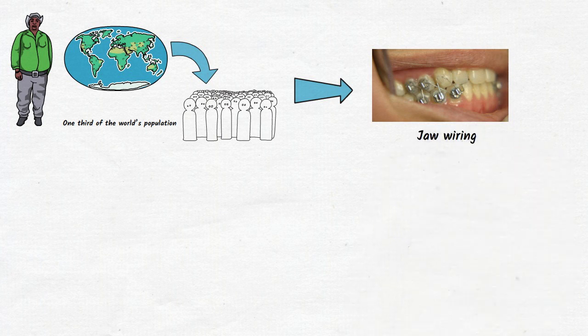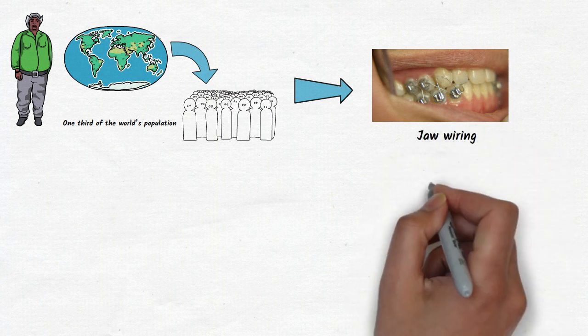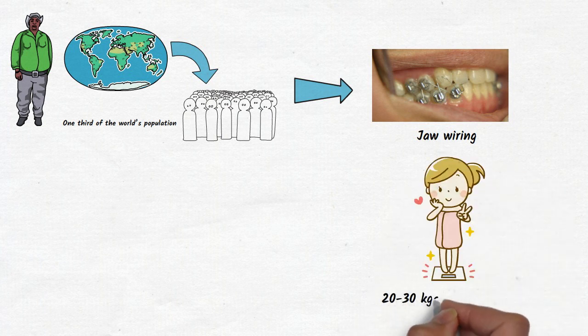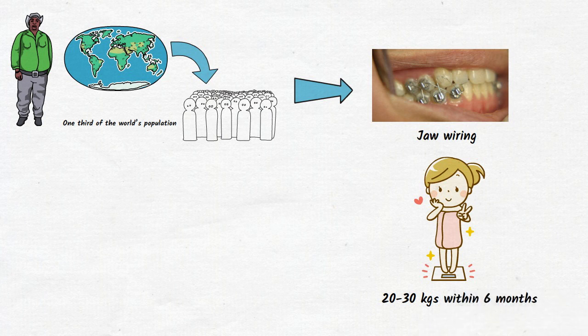Previously, a method called jaw wiring was tried as a temporary method in the treatment of morbid obesity. In this method, people lost 20 to 30 kgs within six months.